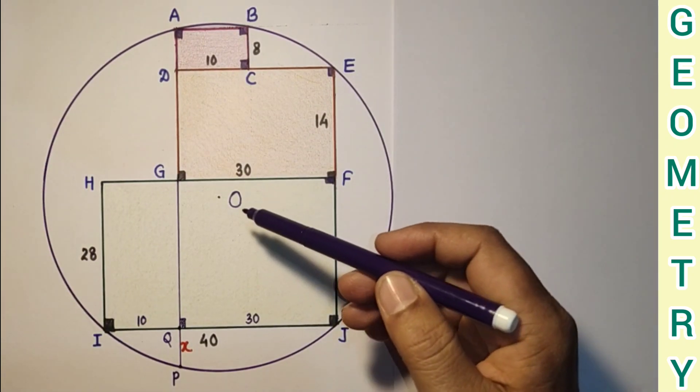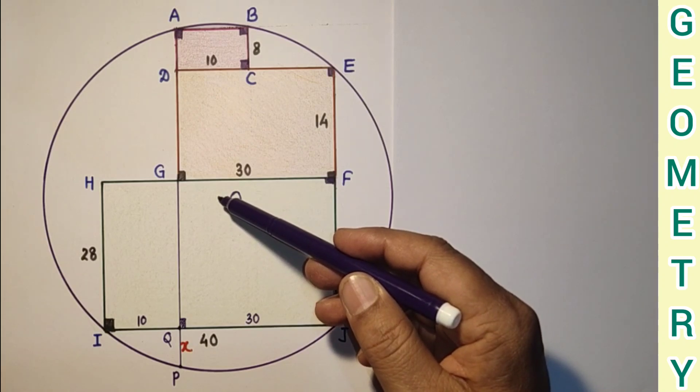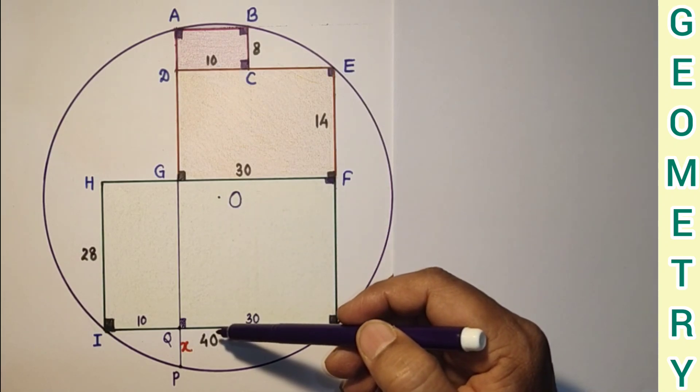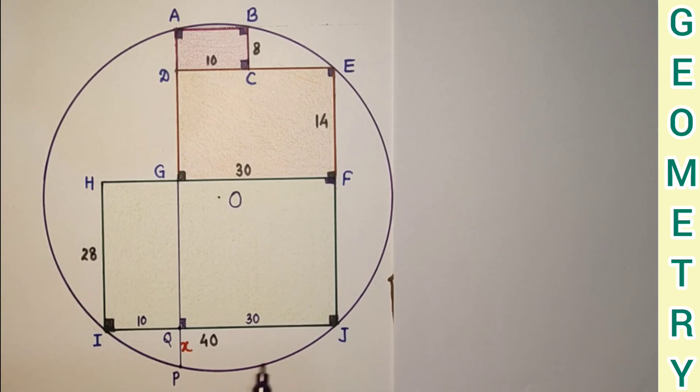Now if we draw perpendicular from this center to this chord, this chord will be bisected and the whole thing is 40, so after drawing perpendicular here...